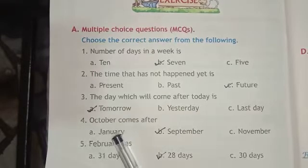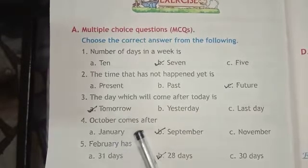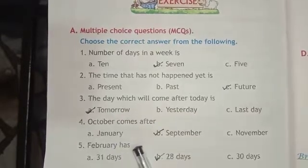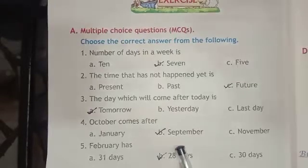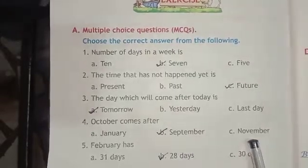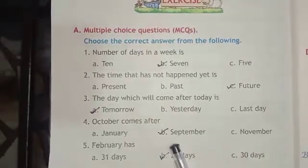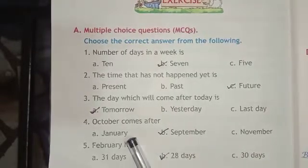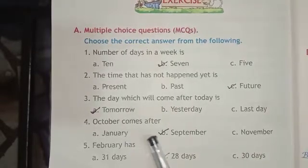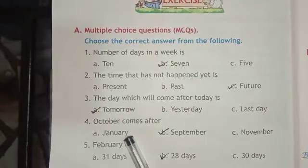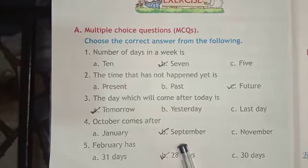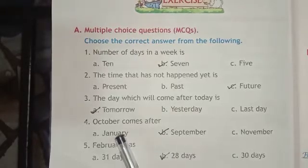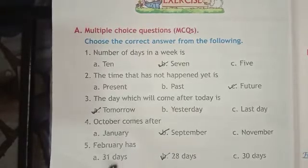Next: October comes after — January, September, or November? The answer is September. October comes after September. September is the current month, and October comes after it.